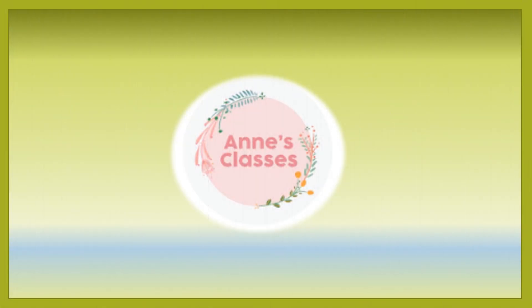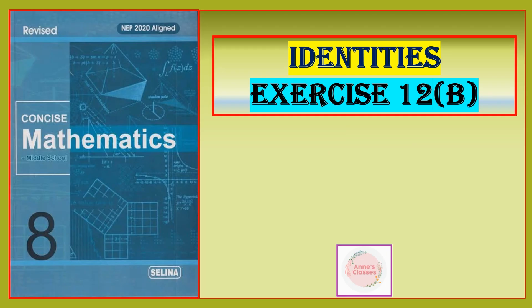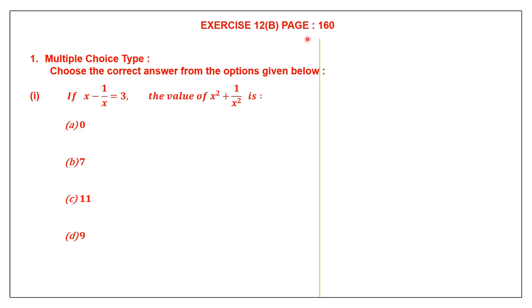Hello students, welcome to Ann's classes. Let's do identities exercise 12b. Exercise 12b is found on page number 160 and question 1 is the multiple choice type. Choose the correct answer from the options given below.